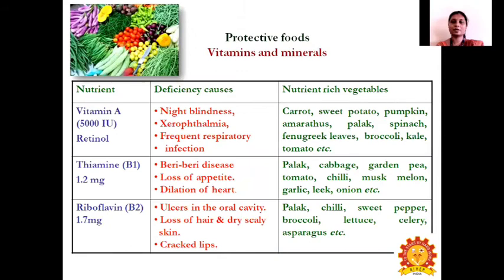Protective foods are vegetables rich in vitamins and minerals. Vitamin A, otherwise called retinol, is found in carrot, sweet potato, pumpkin, amaranthus, garlic, spinach, fenugreek leaves, broccoli, kale, and tomato. Deficiency of vitamin A leads to night blindness, xerophthalmia, and frequent respiratory infections.